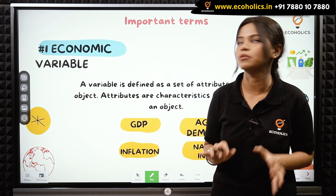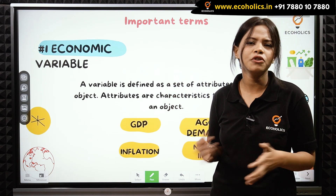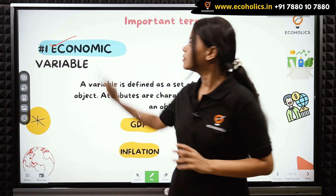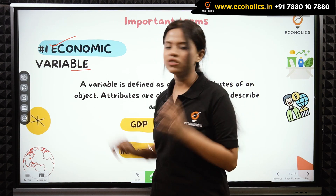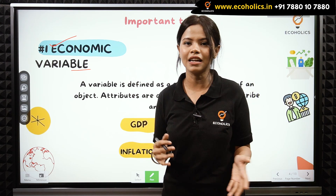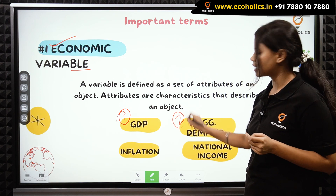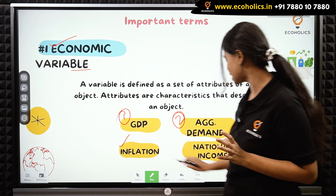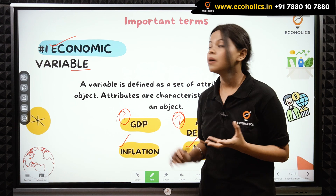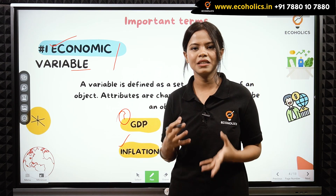Let's understand the economic terms — the most important terms you will get to see very often. The first term is 'economic variable.' Economic variable means that variable which we study. In macroeconomics, we study about GDP, aggregate demand, inflation, and national income. So these things — GDP, aggregate demand, inflation, and national income — become your economic variables.